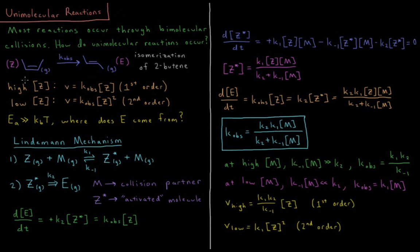The example we're going to use is the isomerization of 2-butene. There are two isomers of 2-butene: we have the Z isomer, which you might call the cis isomer, and the E isomer, or what you might call the trans isomer. And there's some observed rate constant which determines the rate at which this reaction occurs in the gas phase.